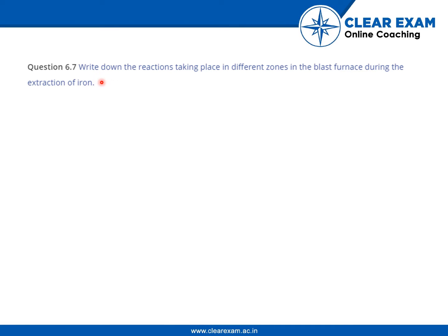The question is to write down the reactions taking place in different zones in the blast furnace during the extraction of iron. This is basically a memory-based question. At 500 to 800 Kelvin, these three reactions take place: